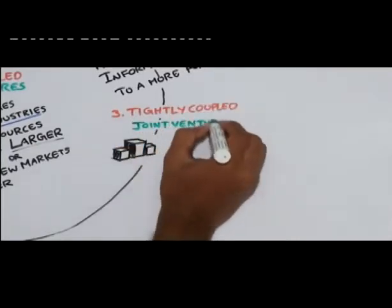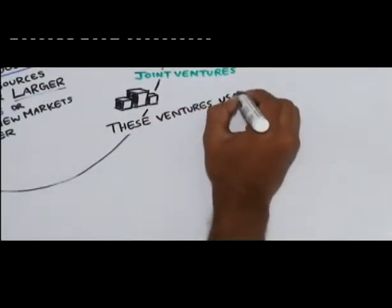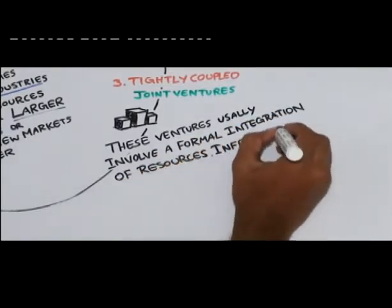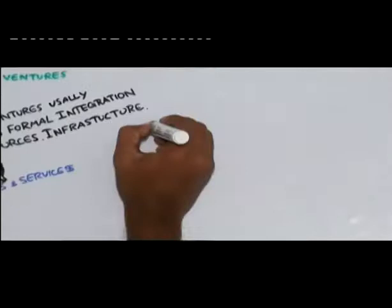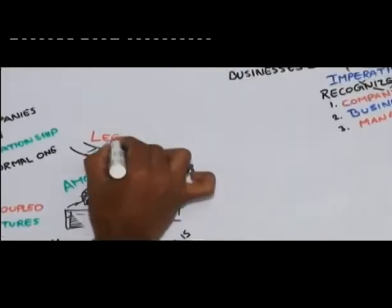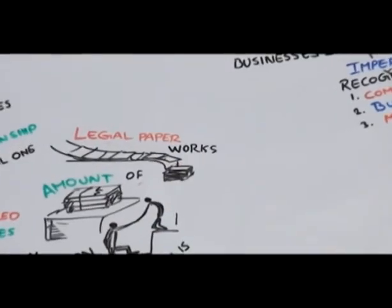Three, tightly coupled joint ventures. These ventures usually involve a formal integration of resources, infrastructure, processes, and services. Commitment between the partners is high, as is the amount of legal paperwork joining the organization.